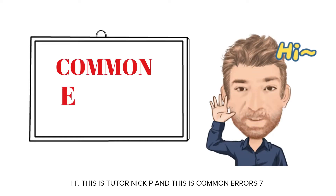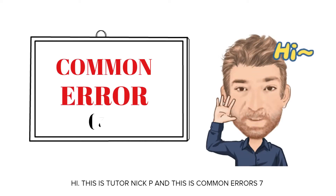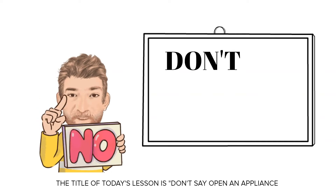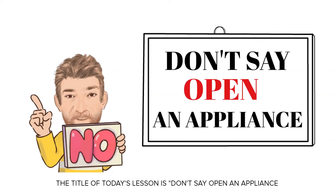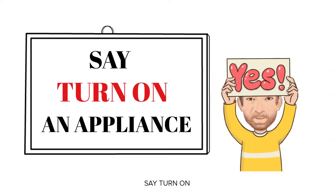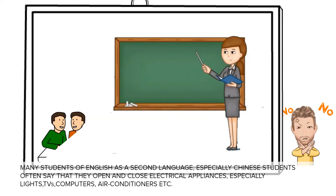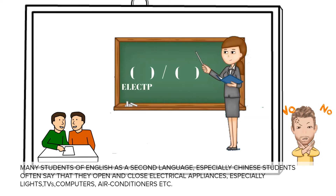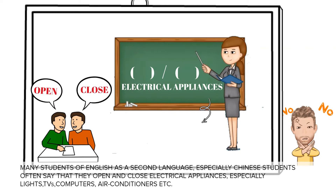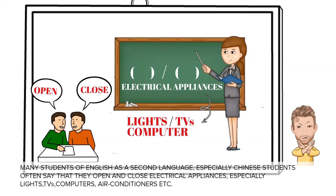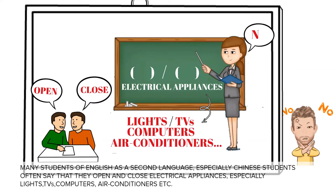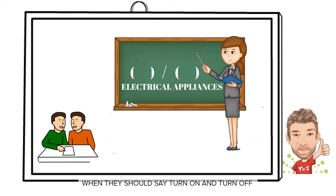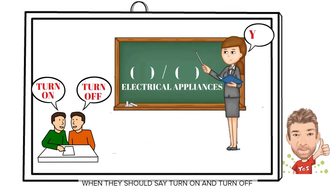Hi, this is Tutor Nick P and this is Common Error 7. The title of today's lesson is: don't say 'open' an appliance, say 'turn on.' Many students of English as a second language, especially Chinese students, often say that they open and close electrical appliances — especially lights, TVs, computers, air conditioners, etc. — when they should say 'turn on' and 'turn off.'